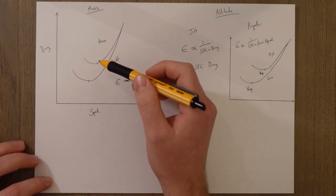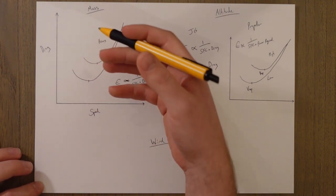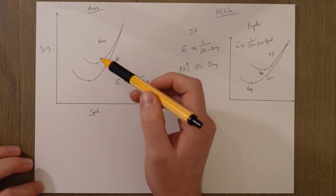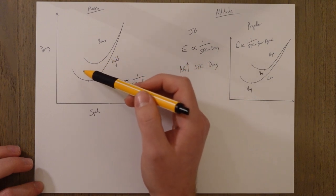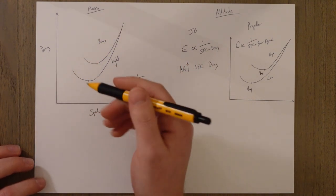A heavier aircraft basically needs more lift therefore producing more induced drag as a result. This means that we have a drag curve which is further up into the right and it would be the same thing with the power required line.